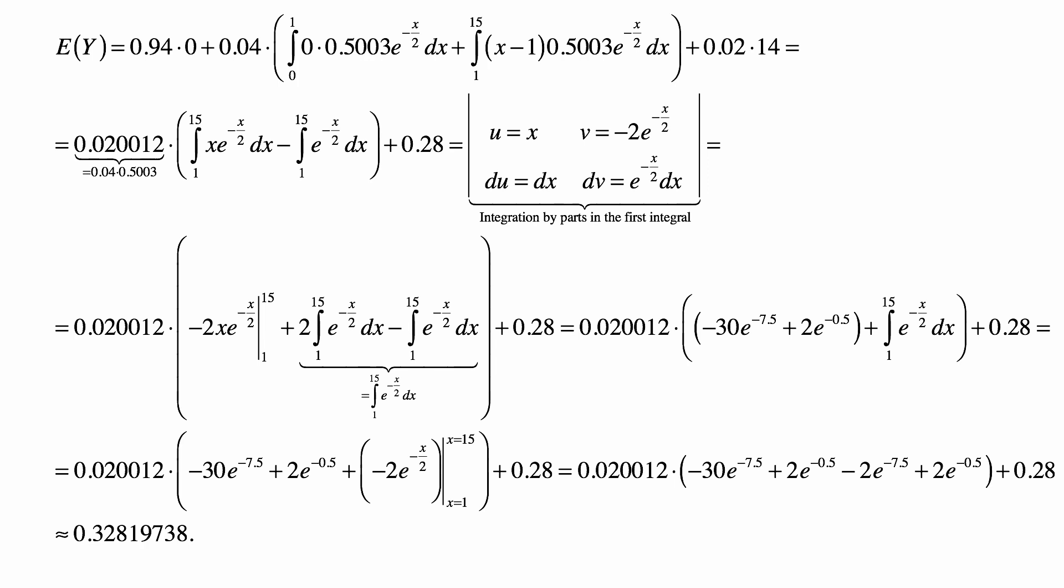Okay, so what's the function whose derivative is e to the minus X over 2? It's minus 2 times e to the minus X over 2. We evaluate from 1 to 15. And we get the expression that you see here.